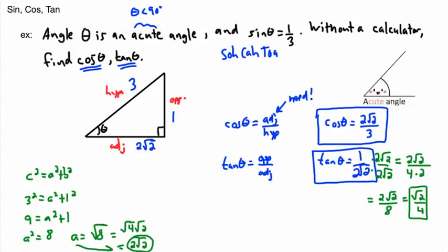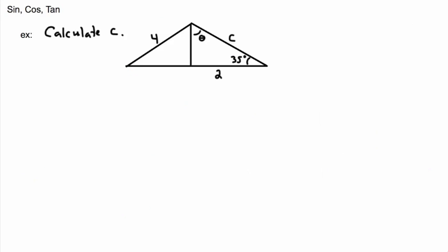So that's how we do this one. It may have seemed complicated, but all we had to do was first use Pythagoras' theorem to find the adjacent side, then plug that value into the cosine and tangent formulas. Let's do another example: calculate C.